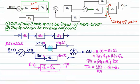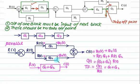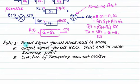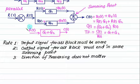Why is it called parallel? The rule is: the input of any number of blocks must be the same — whether 2, 3, or 4 blocks, all of them must have the same input. The second rule is that the output of each block must go to the same summing point. This symbol is called the summing point. So rule number 1: all blocks must have the same input signal. Rule number 2: all output signals must end at the same summing point.